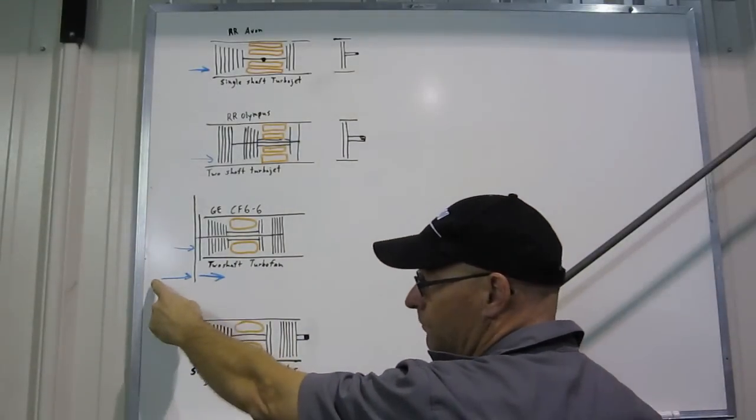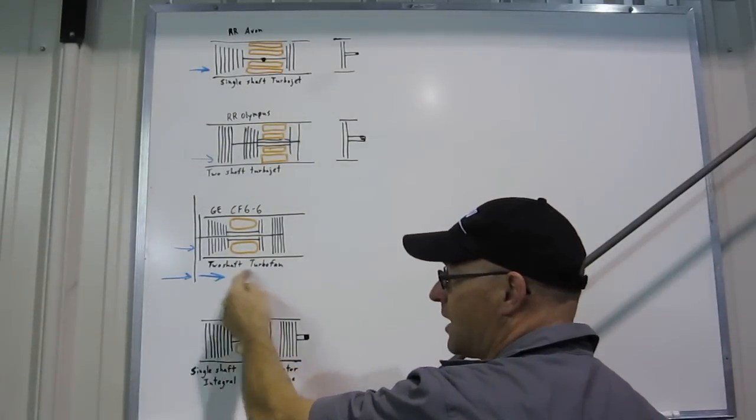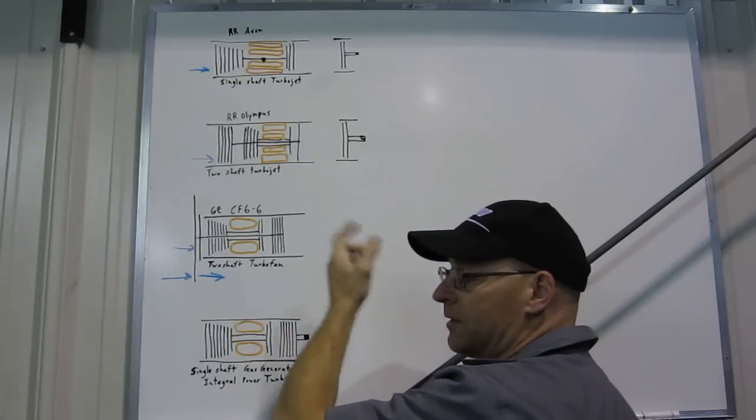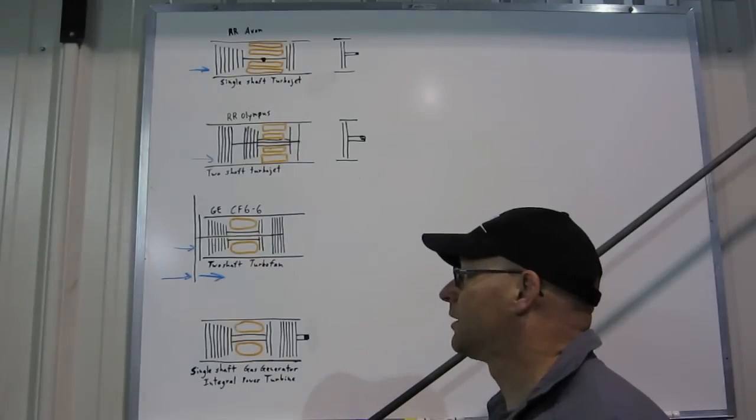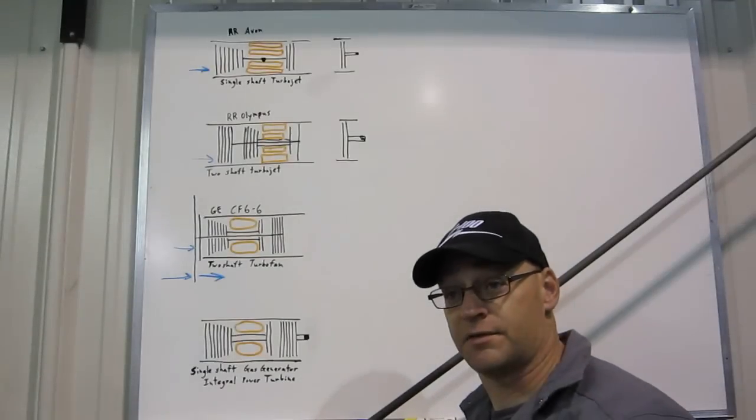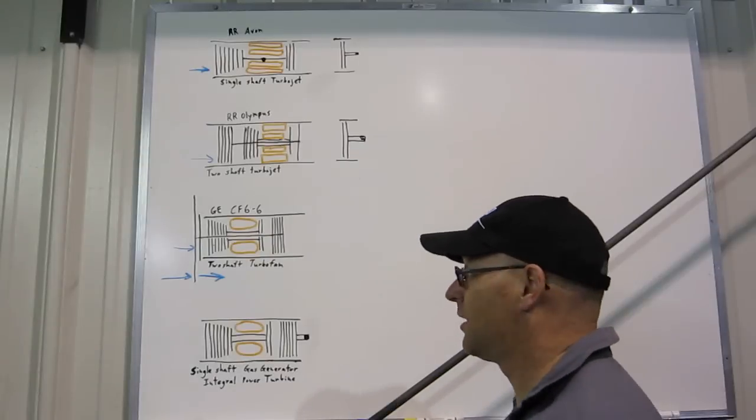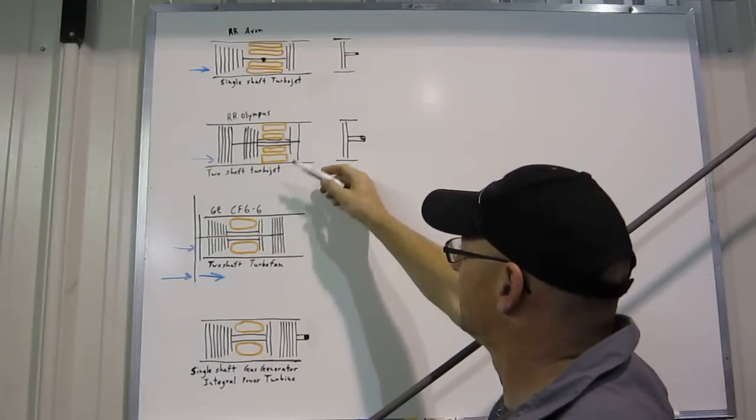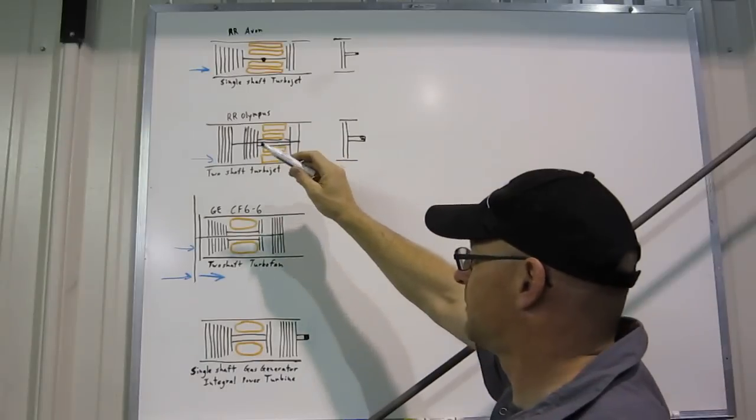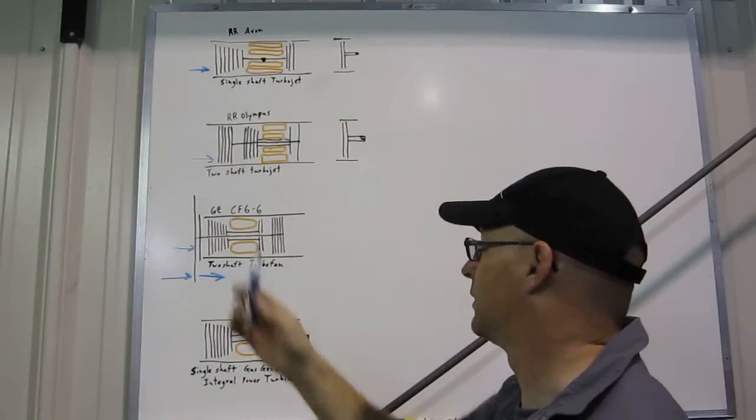It takes power to push that air past the engine. The bypass airflow is very large and it contributes significantly to the thrust, but it takes a lot of power to do that. So that's why the low-pressure turbine is much larger in the CF-6 than in the single stage of the Rolls-Royce Olympus. There's a lot more air getting moved through here.